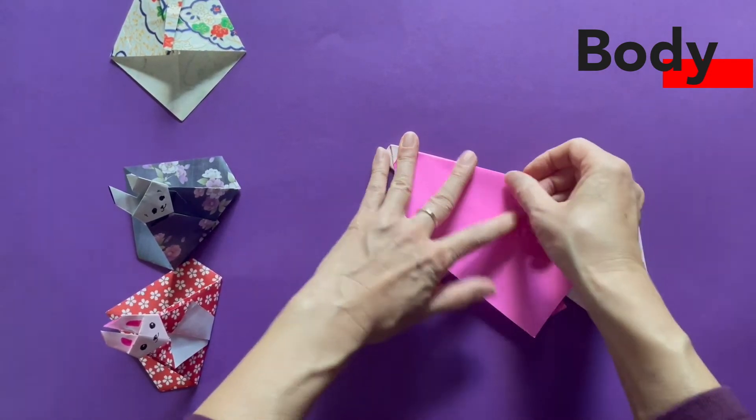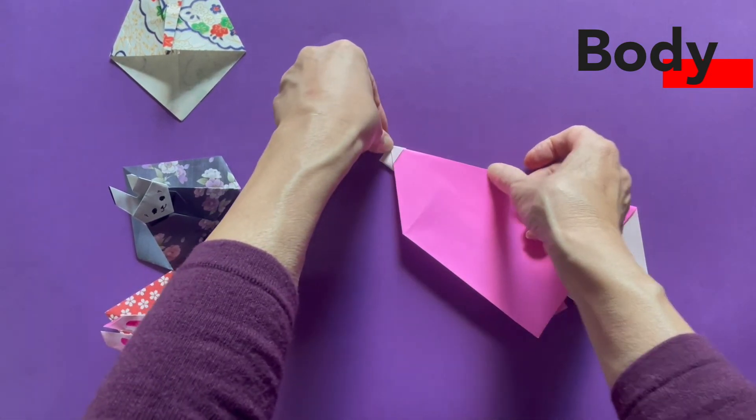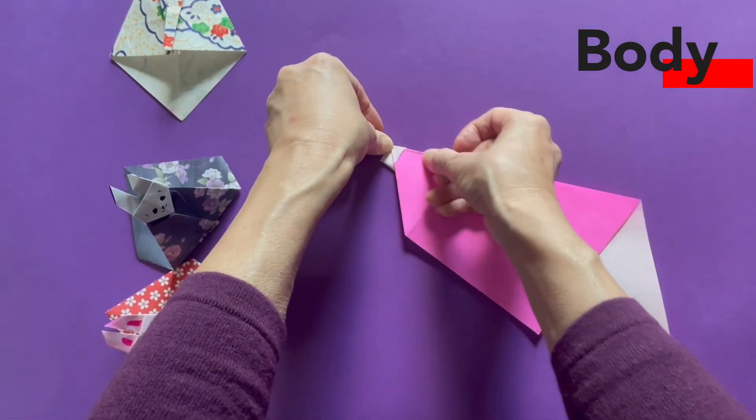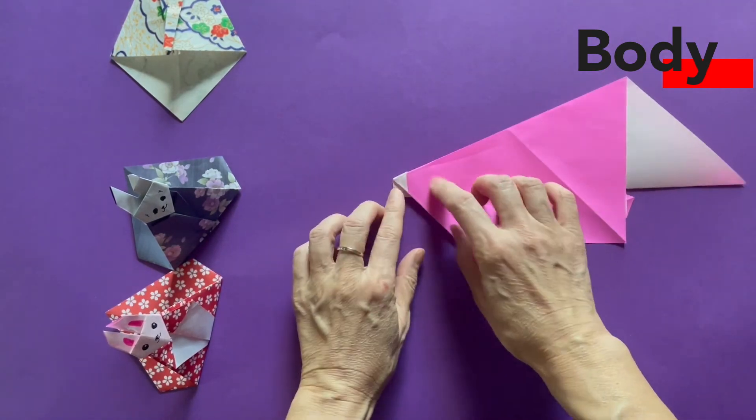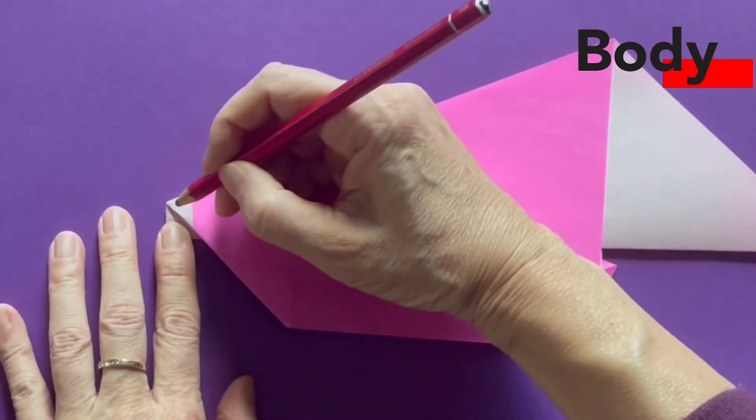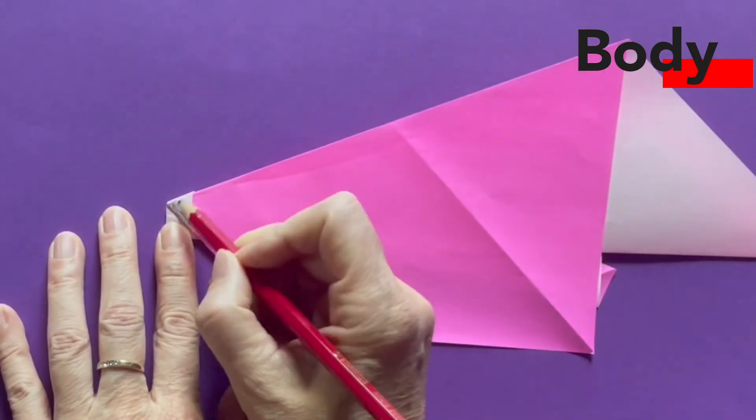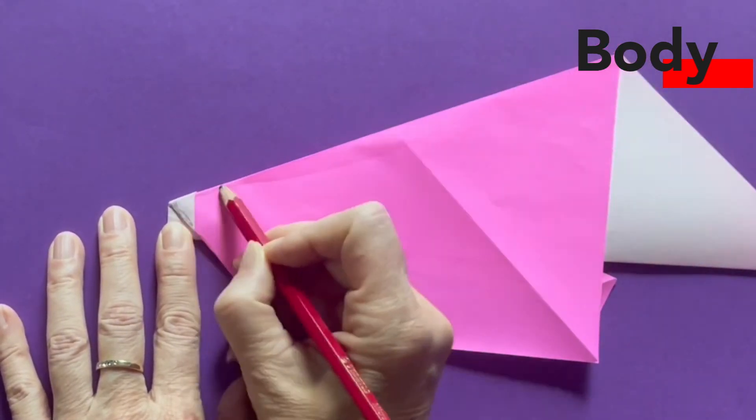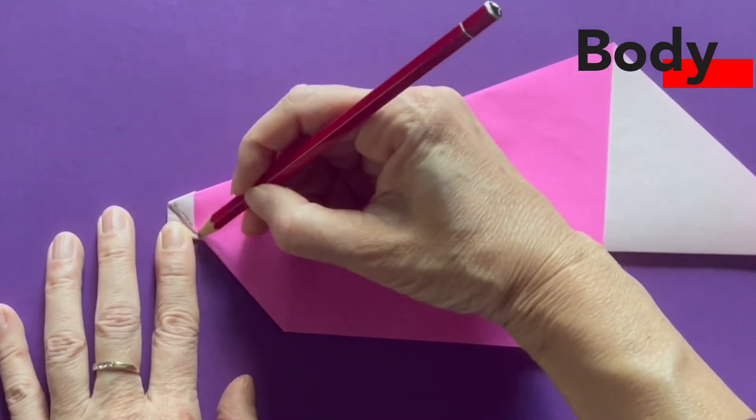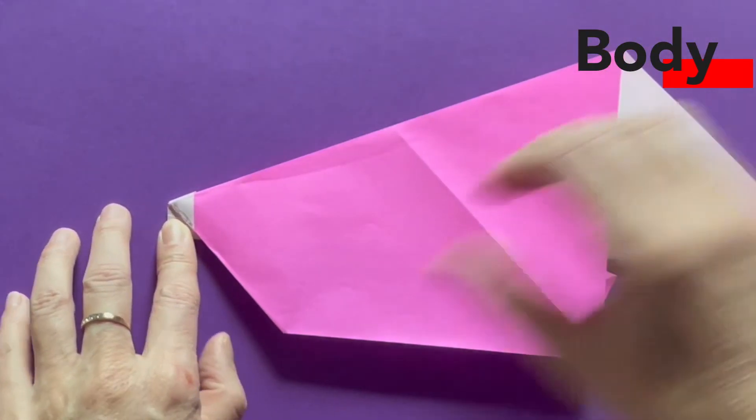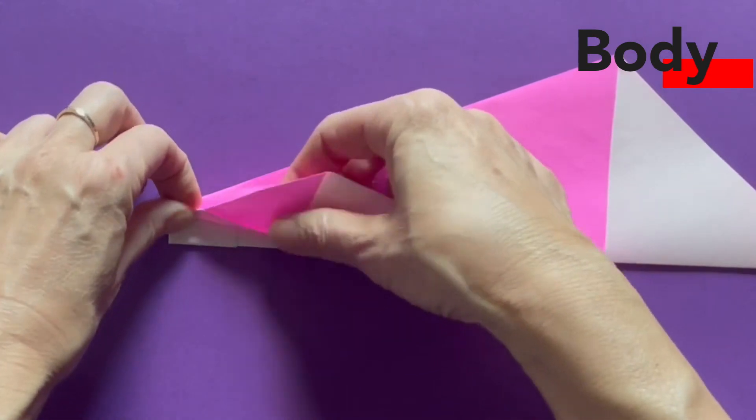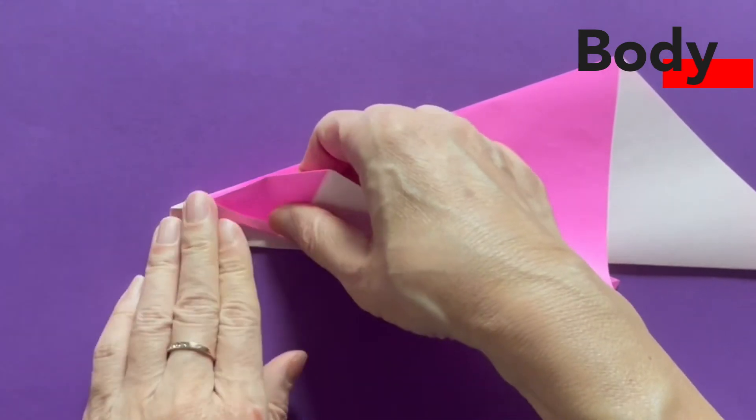And we will do one more. And that is, we are repeating the same thing we did in the first back side. Here's a folded edge. And the closest folded edge is right here. Bisecting that triangle. And make a sharp crease.